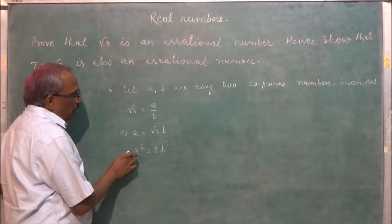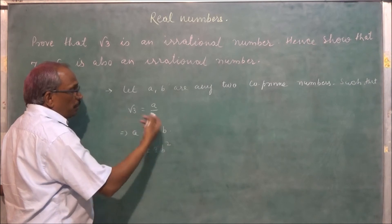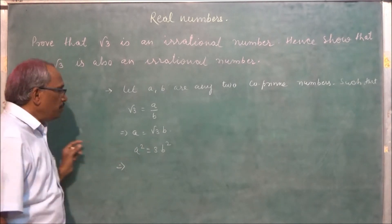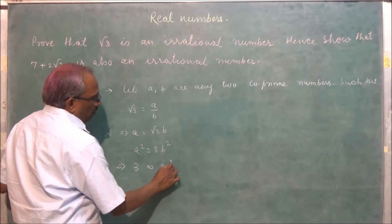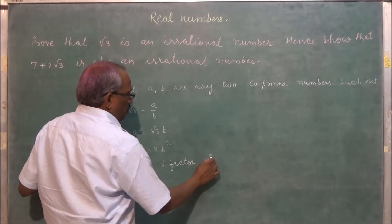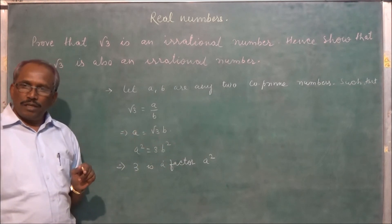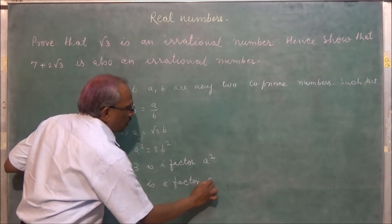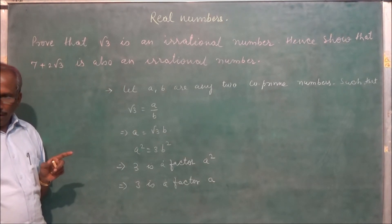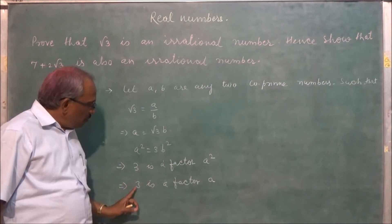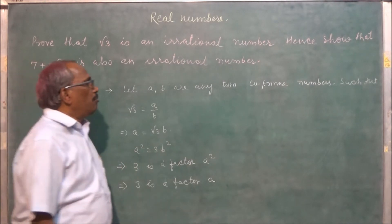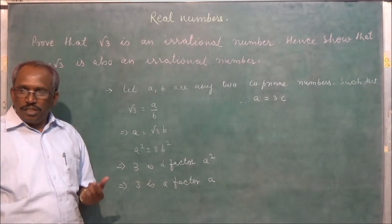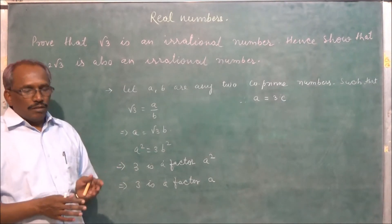This implies 3 is a factor of a squared. If 3 is a factor of a squared, then this implies 3 is a factor of a. So therefore, let a equal to 3c, since 3 is a factor of a, it can be written as a multiple of 3.